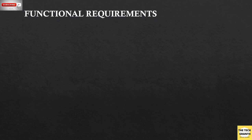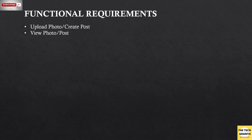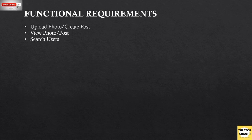The first functional requirement is that we should be able to upload a photo, which is also called creating a new post. When I create a new post I upload a new photo or a small video. Once I have uploaded a post, other friends who are connected to me should be able to view my post and photo, and they should be able to like and comment on it. We should also be able to search a user, find my friend and follow them.